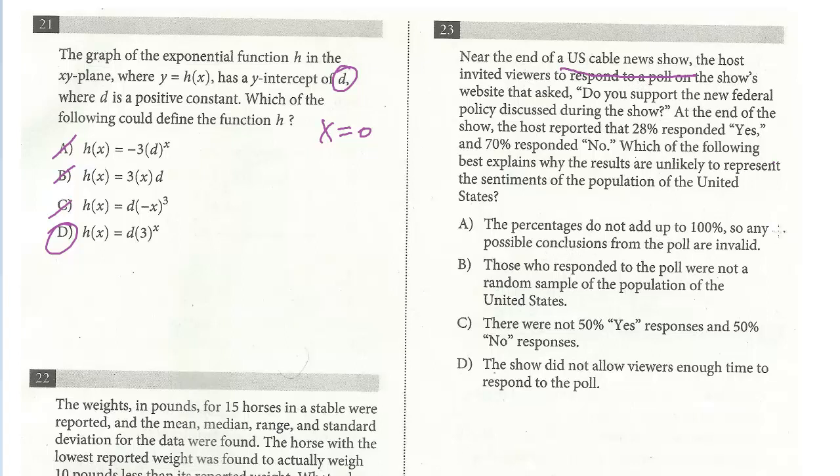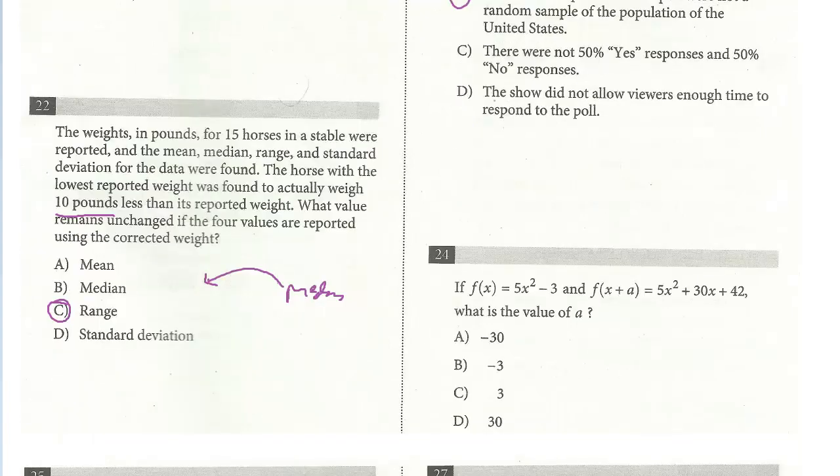Let's take a look at the choices. The percentages do not add up to 100%, so any possible conclusions from the poll are invalid. That doesn't really make any sense. We're looking for an answer that says it's not a cross-section. It's not an accurate representation of the population. Those who responded to the poll were not a random sample of the population of the U.S. This is definitely the right answer. You could predict this before we've been looking at the choices. Last one on this page, number 24.